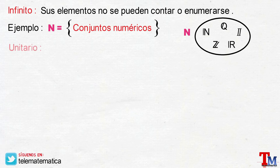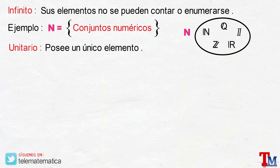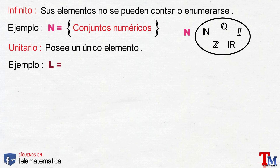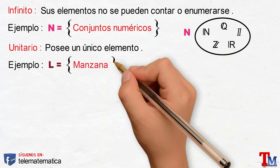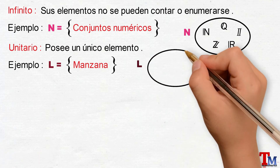Siguiente clasificación, conjunto unitario, que se define como: posee un único elemento. Por ejemplo, el conjunto L, cuyo elemento es una manzana. Y gráficamente sería el conjunto L y su elemento.